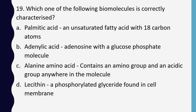Question 19. Which one of the following biomolecules is correctly characterized? Palmitic acid — an unsaturated fatty acid with 18 carbon atoms; Adeniolic acid — adenosine with glucose phosphate molecule; Alanine amino acid — contains an amino group and an acetic group anywhere in the molecule; Lecithin — a phosphorylated glyceride found in the cell membrane. Correct answer is option D: lecithin, a phosphorylated glyceride found in the cell membrane.